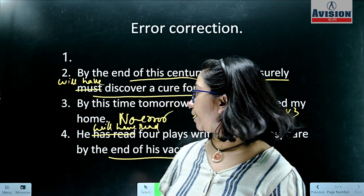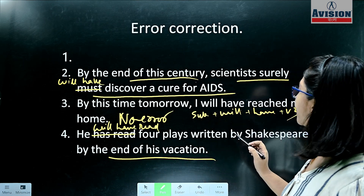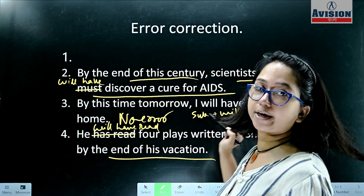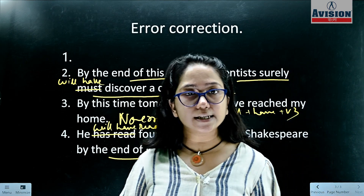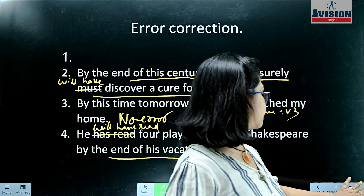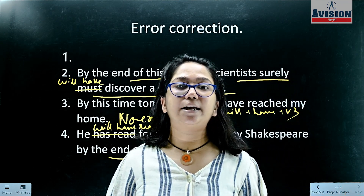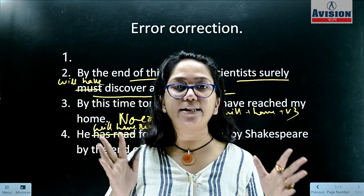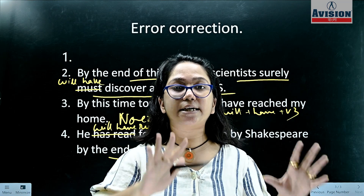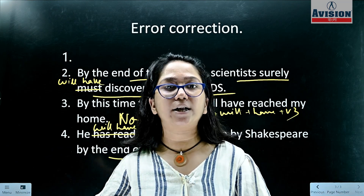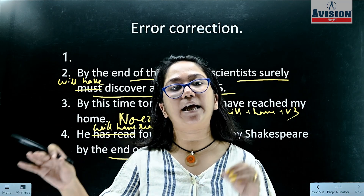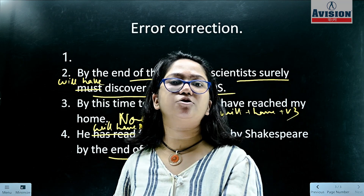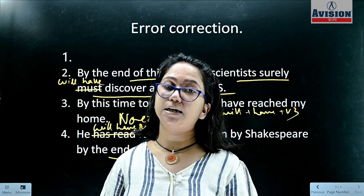'He will have read four plays written by Shakespeare by the end of his vacation.' So basically in this tense structure, a certain time is mentioned in the future — that is what defines the future perfect tense.